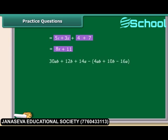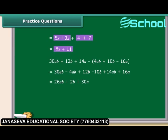Now, the question is to subtract 4ab plus 10b minus 16a from 30ab plus 12b plus 14a. We have to use the same criteria as for addition — bring the like terms together, taking into consideration the sign of the terms. On rearranging, we get 26ab plus 2b plus 30a.